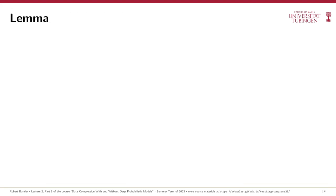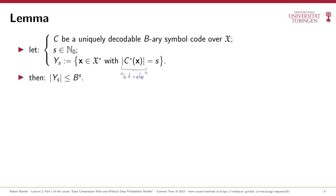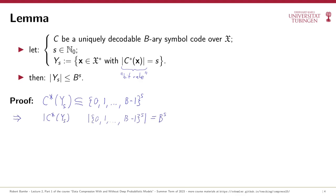We will first prove a simple lemma. Consider a uniquely decodable b-ary symbol code over some discrete alphabet and some integer s. Define the set Y_s as the set of all messages x whose encoding C*(x) has length s. Then the size of Y_s is at most b^s, because there are only b^s distinct b-ary bitstrings of length s. More formally, the image of Y_s under C* is a subset of {0,...,b-1}^s, which has b^s elements. Since C is uniquely decodable — meaning C* is injective — the image and pre-image have the same size, so Y_s has at most b^s elements.